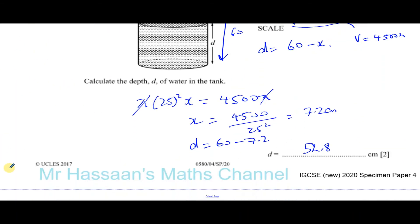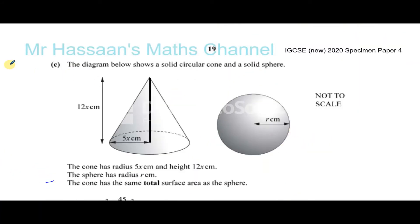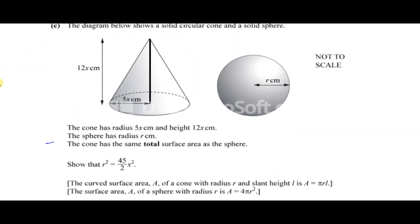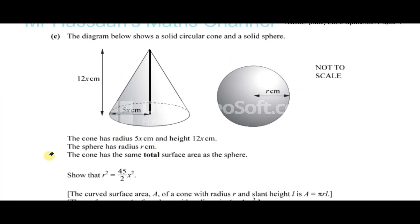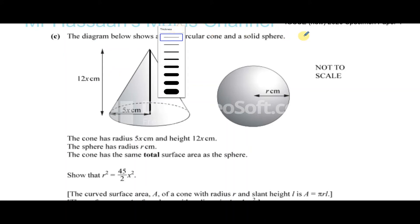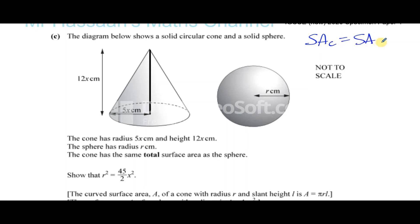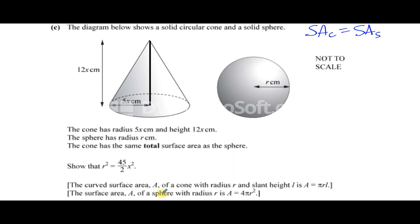Part c: the diagram shows a solid circular cone and a solid sphere. The cone has radius 5x centimeters and height 12x centimeters; the sphere has radius r centimeters. They have the same total surface area. We need to show that r² = 45x²/2. We're told the curved surface area of a cone is πrl, and the surface area of a sphere is 4πr².